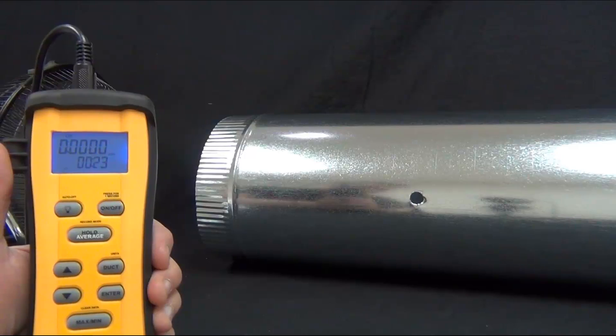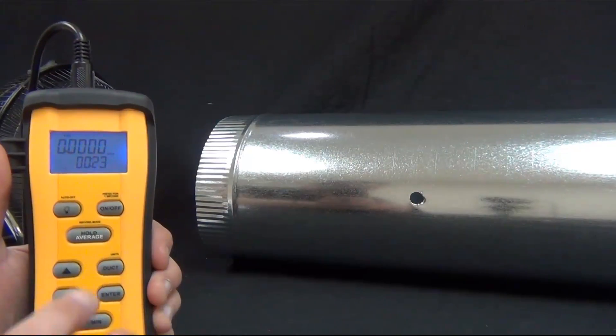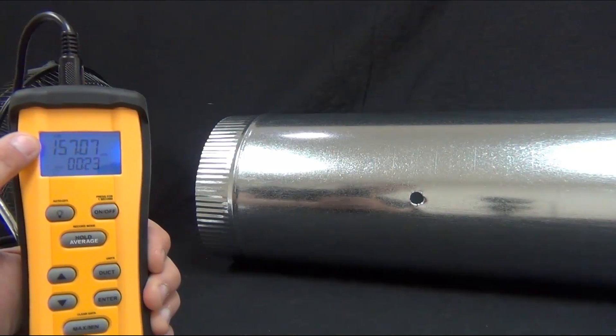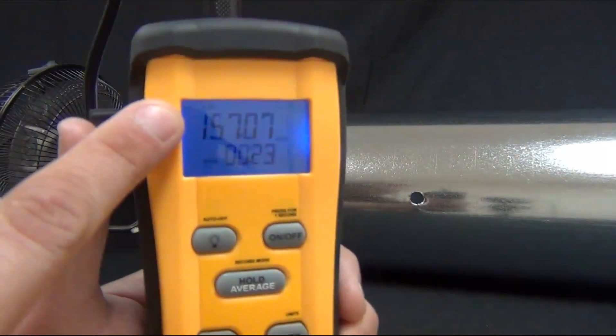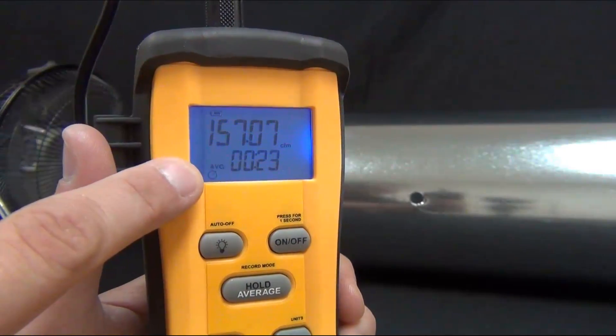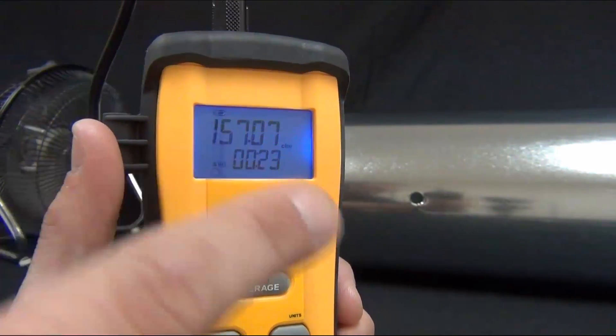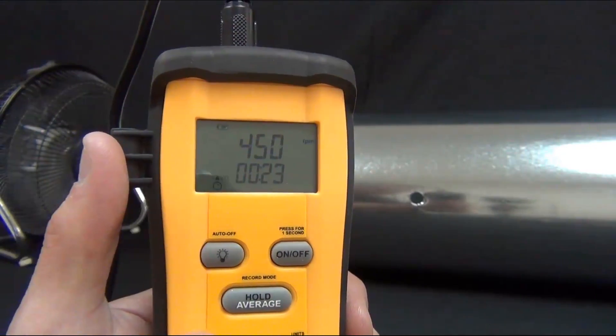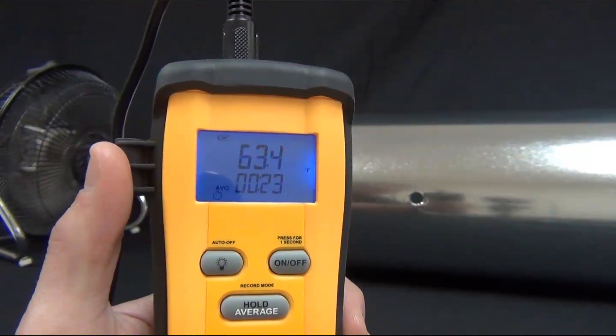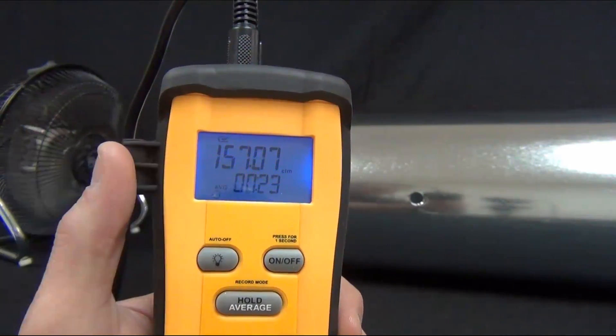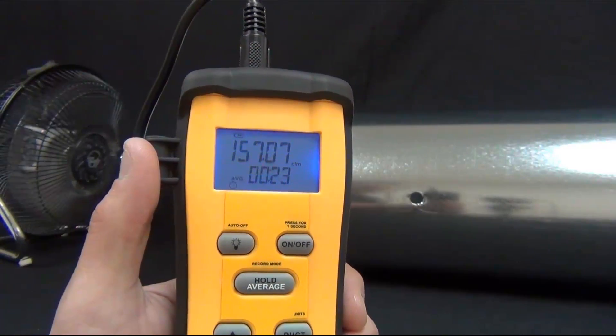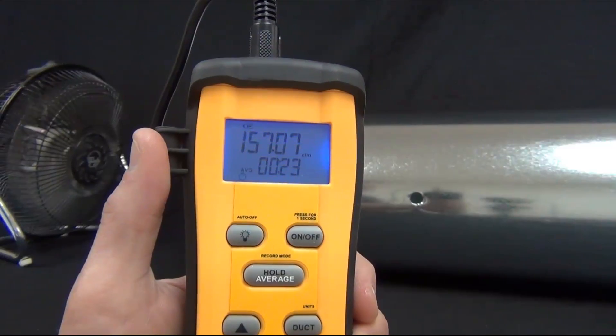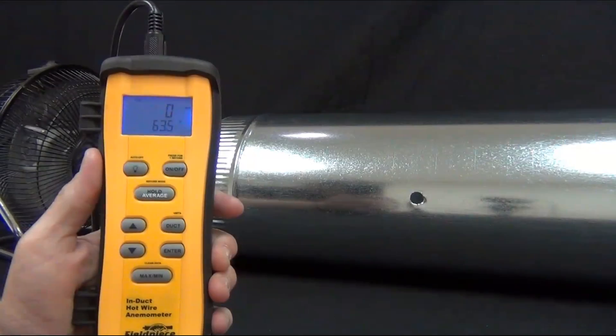You'll see that we're reading zero CFM because we're not in the duct anymore. But to get the average, I'm just going to press average once, and it'll give me an average CFM of 157 across that duct. We did it over a 23 second time span. I can press up if I want to see my feet per minute, so an average of 450, and up again to see my average temperature. That way we knew that we had an accurate CFM in the duct across the entire duct, not just on one side of it or in one spot.